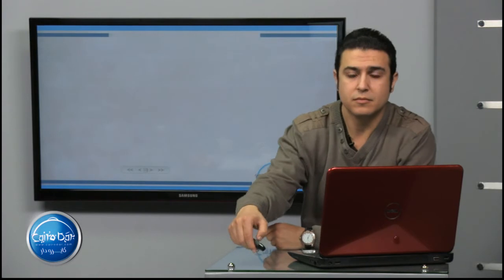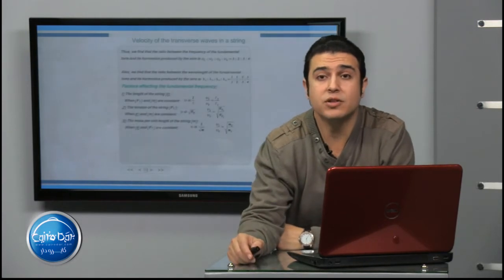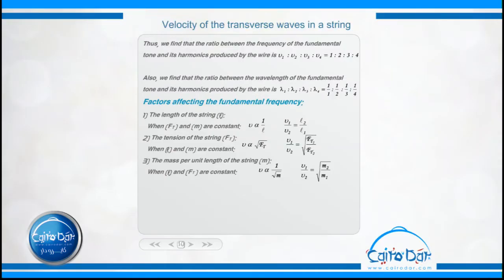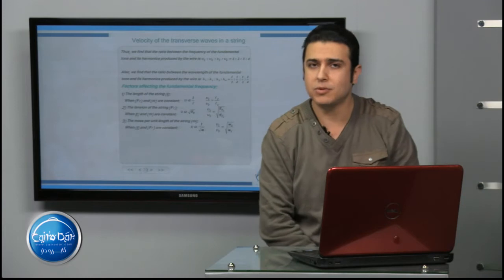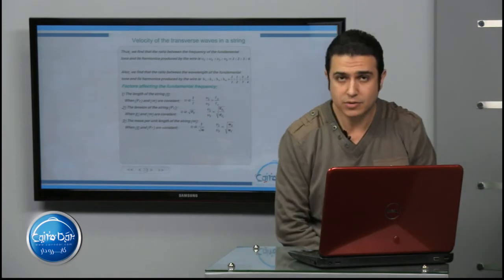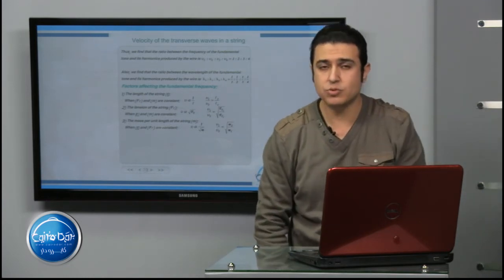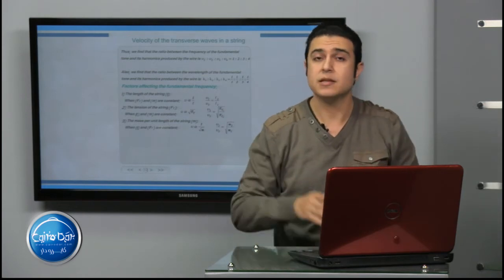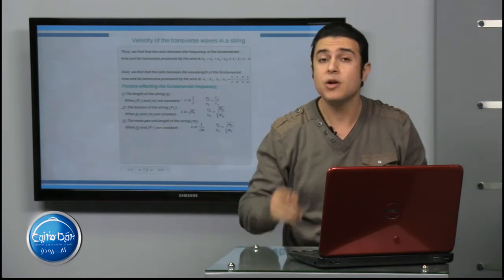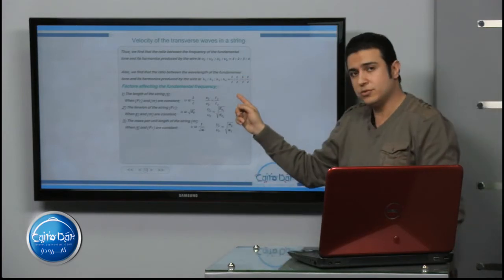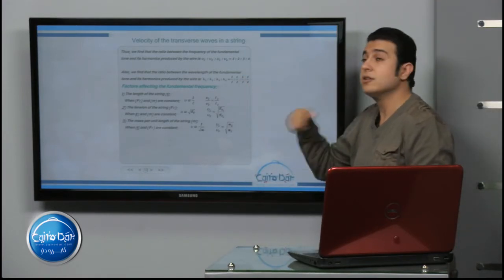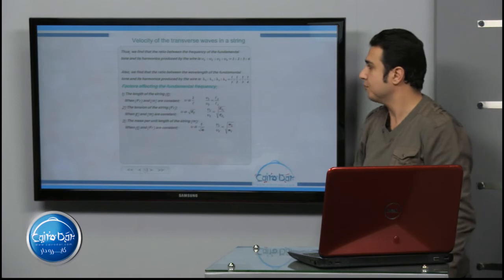When we talk about the velocity of transverse waves in a string, the ratio between the frequencies is nu₁ : nu₂ : nu₃ : nu₄ = 1 : 2 : 3 : 4. What about the wavelengths? The ratio between the wavelengths lambda₁ : lambda₂ : lambda₃ : lambda₄ is 1/1 : 1/2 : 1/3 : 1/4.